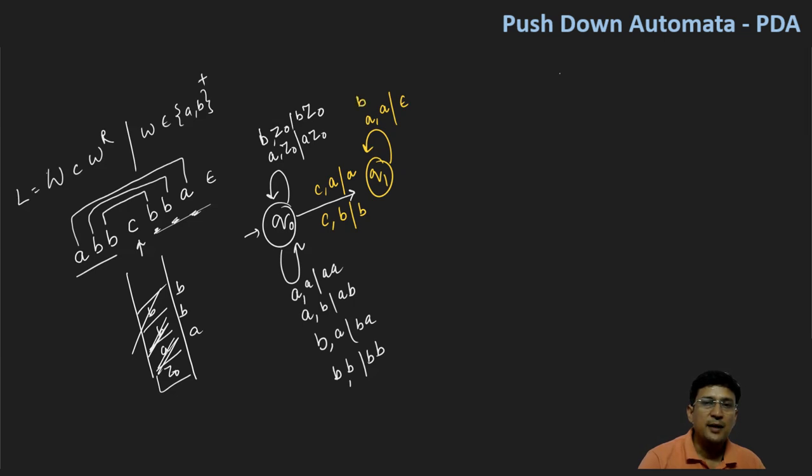Similarly, B to the top of the stack, then you can pop it. So if matching, then you can pop it. Mismatch not. After that, if you see the input symbol, the stack top is Z0, then you can move to the final state QF.